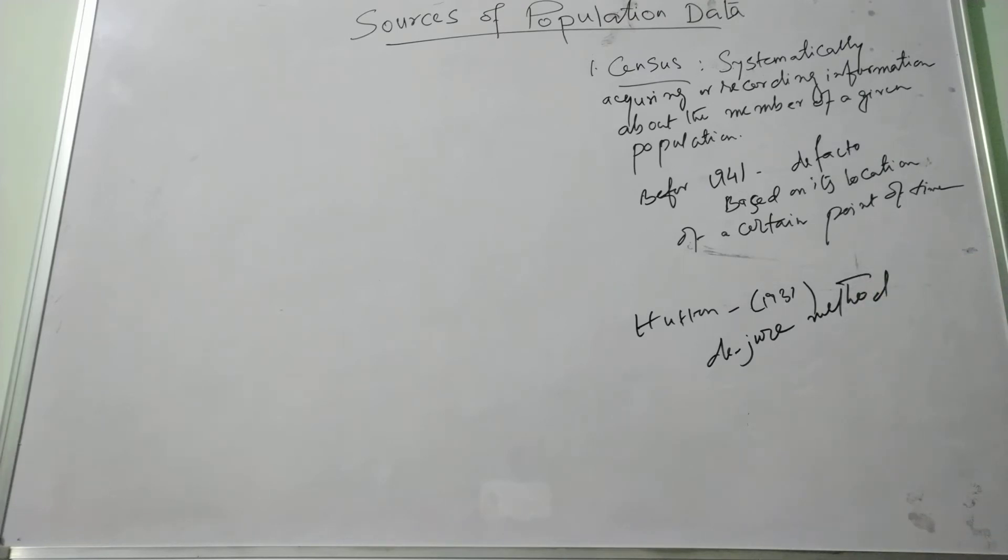That is, instead of recording actual individuals found at a place during the prescribed time, he suggested that the census should cover individuals normally located at every dwelling place in that area.